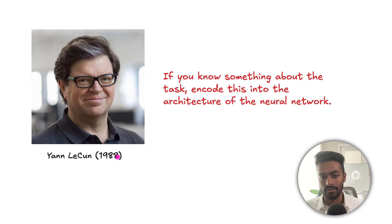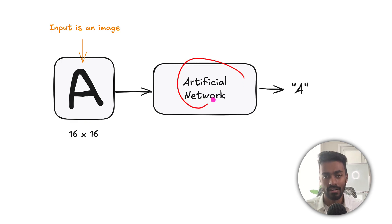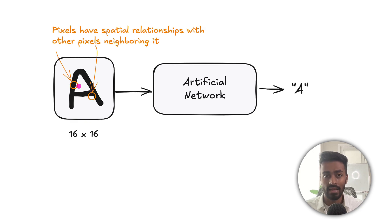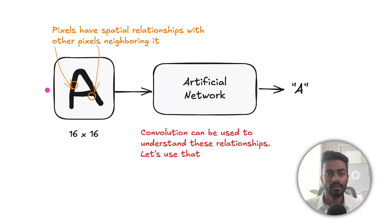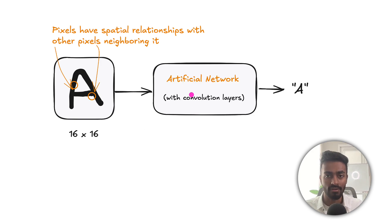Well we had Jan LeCun in 1988 who proposed that if you know something about a task, then you should try to encode this into the architecture of the network. And in this case, well we have a network which has an input of an image. Images have pixels and individual pixels are related and they have spatial relationships with pixels that neighbor it. And so what we could use then is convolution layers can be used to understand these relationships. So we can probably use that in our network, like so.